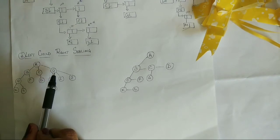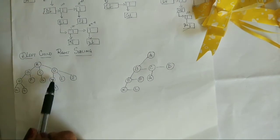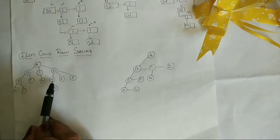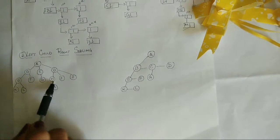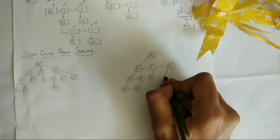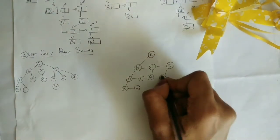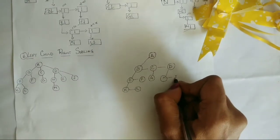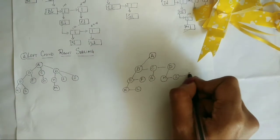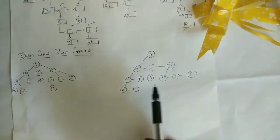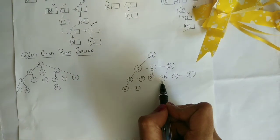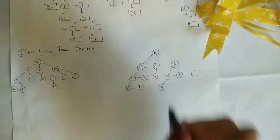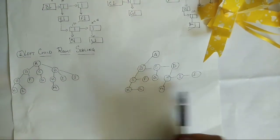Moving on to node D, D has three child nodes: H, I, and J. The leftmost child H is placed to the left, and I and J are siblings to H, placed beside each other as right siblings. H has one more child, M, placed as the leftmost child of H. There are no siblings, so leave it blank.